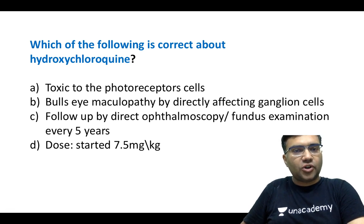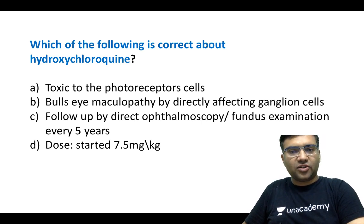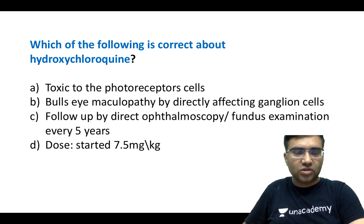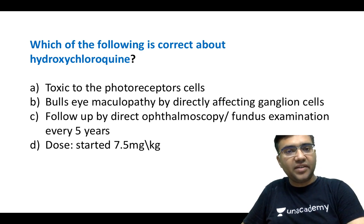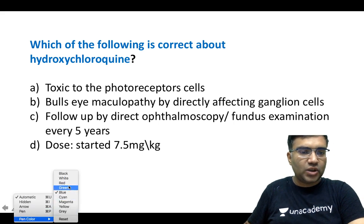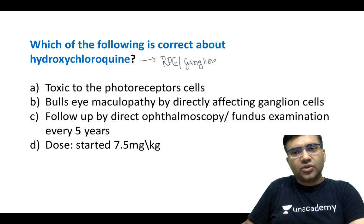The next question: which of the following is correct about hydroxychloroquine? Options included: toxic to photoreceptor cells, bull's eye maculopathy, directly affecting ganglion cells, follow-up by direct ophthalmoscopy every five years, and dose starting at 7.5 mg/kg. Hydroxychloroquine has gained more importance in the COVID era and is used for long-term treatment in immunological disorders like rheumatoid arthritis. Importantly, this drug is toxic not to the photoreceptor cells but to the RPE and ganglion cells. So option B — bull's eye maculopathy — is correct.